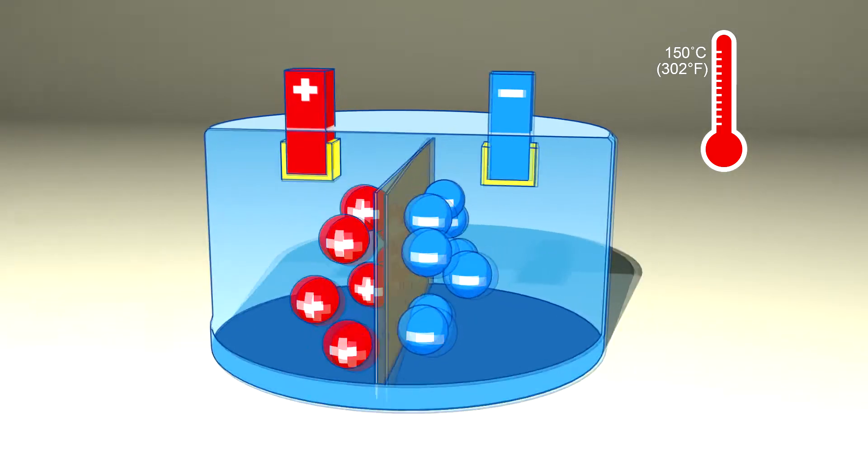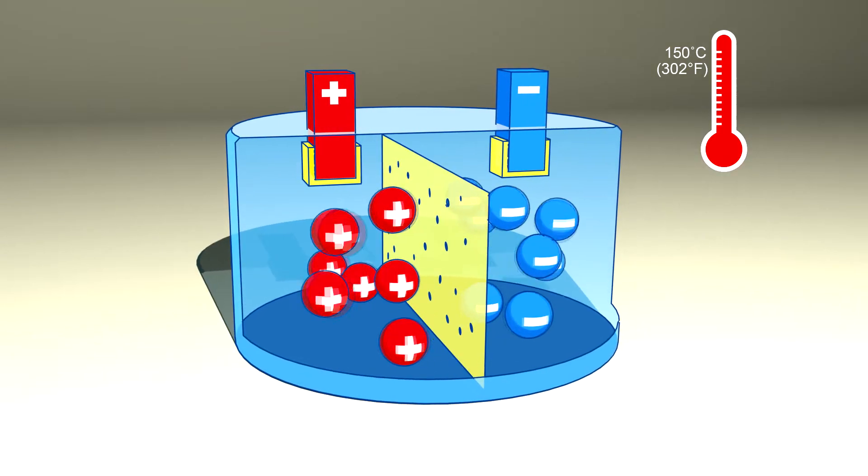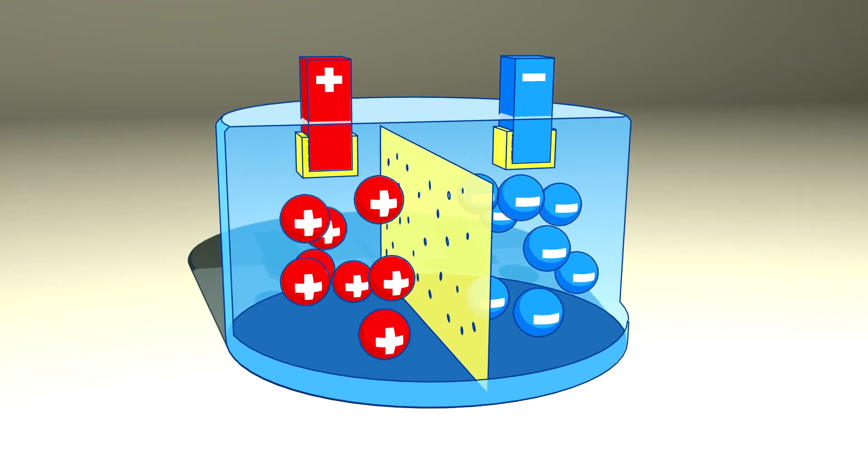This architecture acts as a physical barrier insulating the anode and cathode, decreasing both electric and ionic conductivity and suppressing thermal runaway.